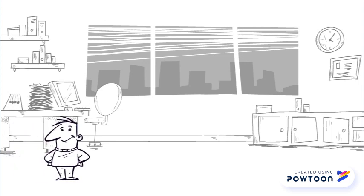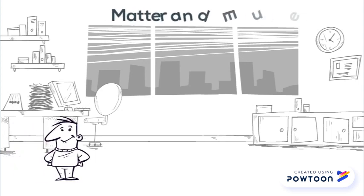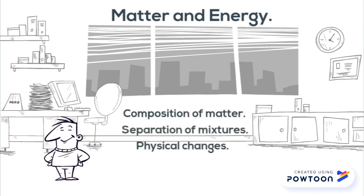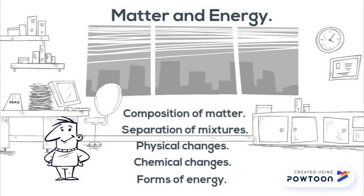Hello everybody, we are going to start unit number seven: matter and energy. We are going to deal with composition of matter, separation of mixtures, physical changes, chemical changes, and forms of energy.